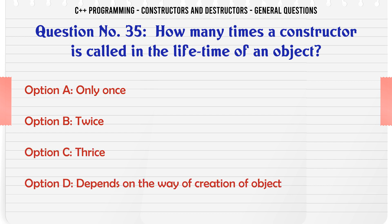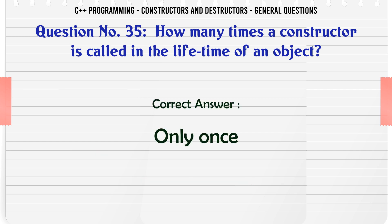How many times is a constructor called in the lifetime of an object? A. Only once. B. Twice. C. Thrice. D. Depends on the way of creation of object. The correct answer is Only once.